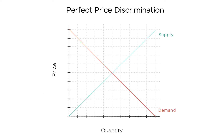Here are the same demand and supply curves from earlier. In this case, the first consumer values the good at P3, so the monopolist charges exactly that amount. The next consumer values the good a bit less, so the monopolist charges her a bit less, and so on. When would the monopolist stop selling? When the consumer's willingness to pay is equal to the marginal cost — right here, where the demand and supply curves cross. At this point, the monopolist could sell another unit, but marginal revenue would be less than marginal cost and he'd lose money on that unit.